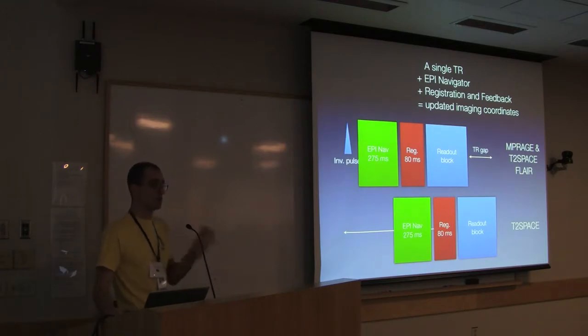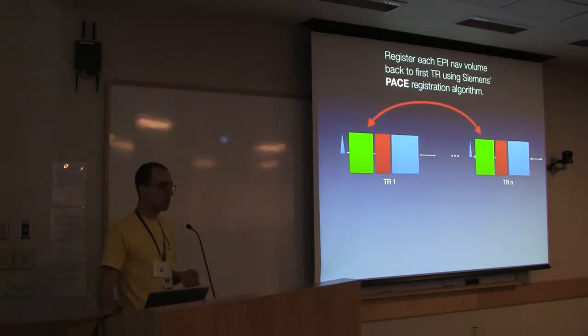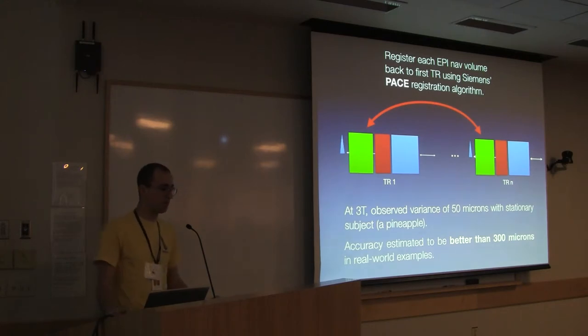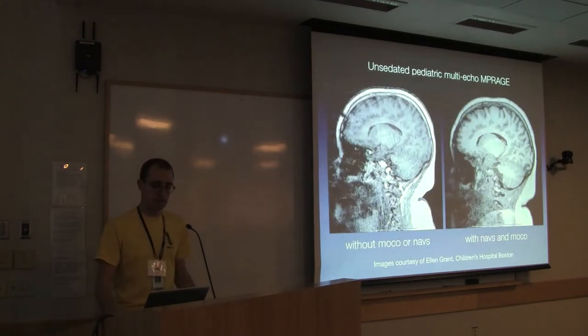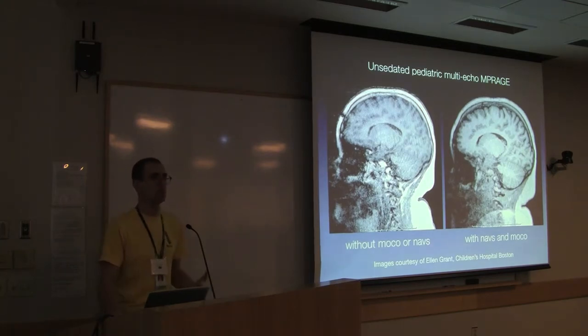I want to talk about how this works over multiple TRs. We know that the real MP-RAGE or T2 space sequences are made up of many, many repetitions of that pattern again and again. What we do is we register each EPI navigator that we get back to the first one we got at the beginning of the sequence. That way we're constantly imaging in the coordinates where we started at the beginning of the scan. We register them back actually using Siemens' Pace algorithm which some of you may be familiar with. At 3T we have observed a variance of only 50 microns with a stationary subject, a pineapple. I'm not going to promise that there isn't bias or other issues once the subject is actually moving. But we think that in real world examples we can probably get better than 300 micron accuracy.